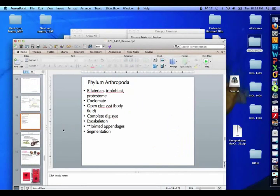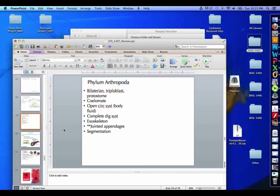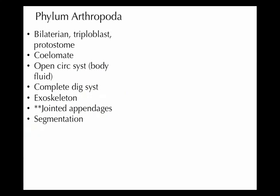We're going to Arthropods, our last phylum. Along with nematodes, they're in the Ecdysozoa, with an open circulatory system and complete digestive system. Really, the exoskeleton is a big characterization of them, and particularly the jointed appendages — that's what Arthropoda means. 'Poda' means feet, and 'arthro' means jointed, like arthritis — disease of your joints. So these are jointed feet.